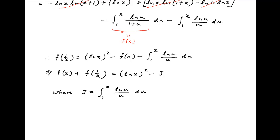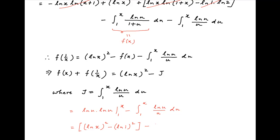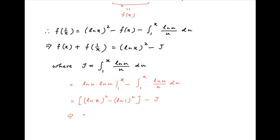This integral j can be evaluated by integrating by parts: ln(u) times ln(u), evaluated from 1 to x, minus the integral from 1 to x of ln(u) times (1/u) du. Notice the second term equals j, so putting in the limits gives ln²(x) − ln²(1) − j. Therefore 2j = ln²(x), and so j = (1/2)ln²(x).